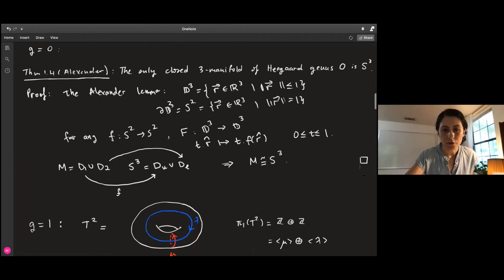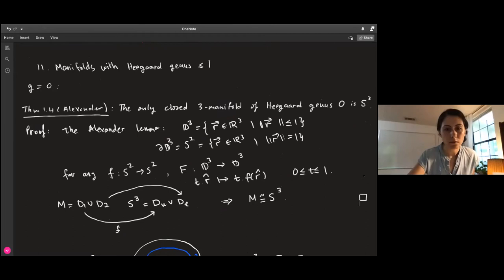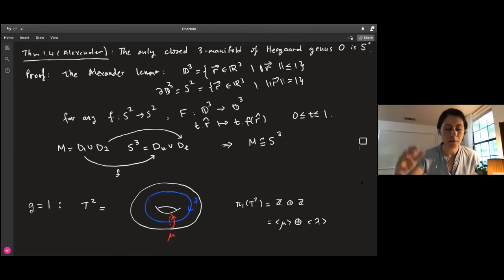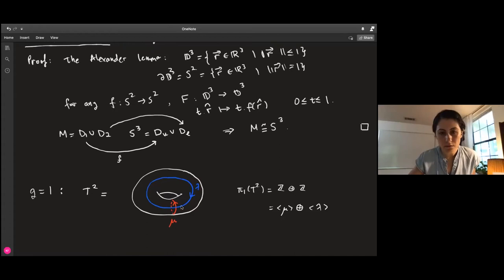Now we can move to genus 1 three-manifolds. We have to understand homeomorphisms on the torus. These are the common way to choose a basis for the fundamental group of the torus, which we know is Z ⊕ Z. μ is the meridian and λ is the longitude. If this picture describes a solid torus, the meridian bonds the disc.